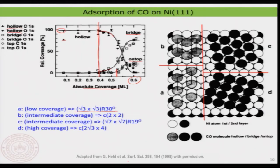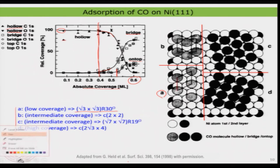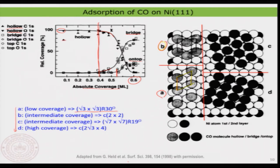Let me show the different structures assigned at different coverages for CO on Ni(111), labeled A, B, C, D. At low coverage you have the root-3 by root-3 R30° structure — the same as seen in the palladium 111 case. This is the unit cell. When coverage increases you start to occupy HCP and bridge sites, giving structures B and C at intermediate coverage.